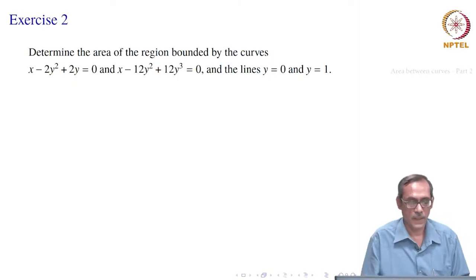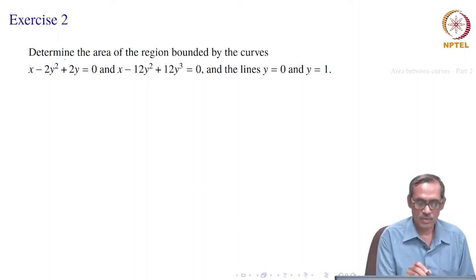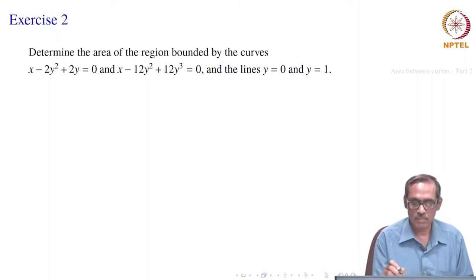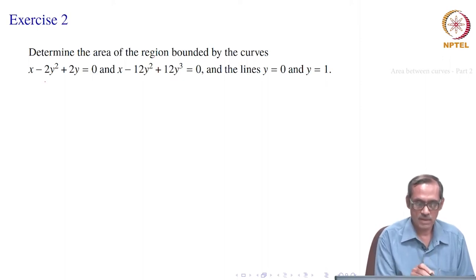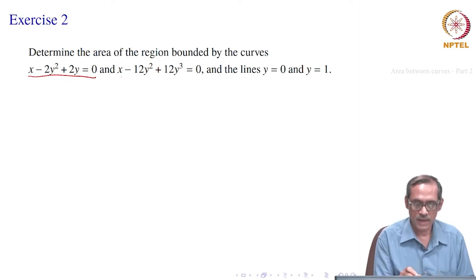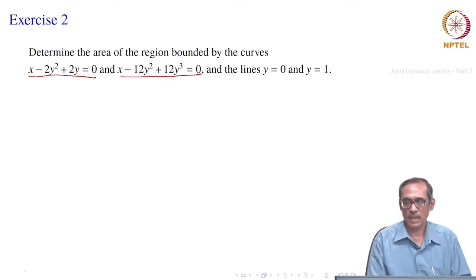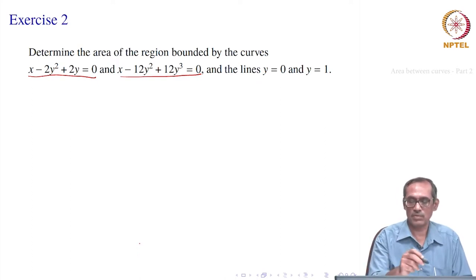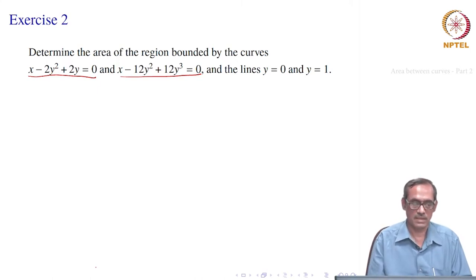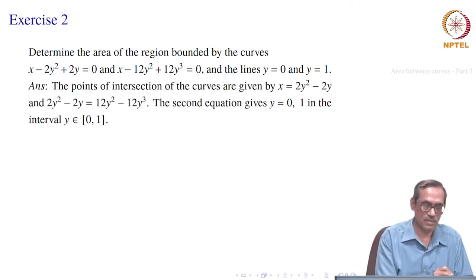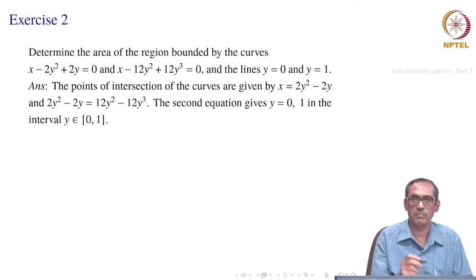Let us take another problem. We want to determine the area of the region bounded by the curves x minus 2y squared plus 2y equal to 0, given implicitly, and x minus 12y squared plus 12y cubed equal to 0. These are the two curves and the lines y equal to 0 and y equal to 1. We have to first see how the curves look and whether the points of intersection coincide or something else occurs.